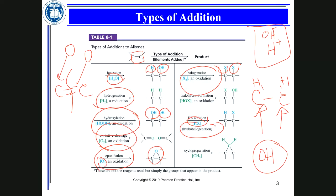Look at the name to understand the reaction. Cyclopropanation means you have a carbon-carbon double bond and you want to make a cyclopropane ring — you add one carbon to form the three-membered ring. Use a flashcard: on one side write the reaction name, on the other write the reactant, reagent, product, and an example. Learn the mechanism of each reaction step by step.